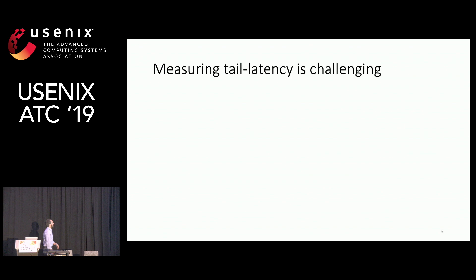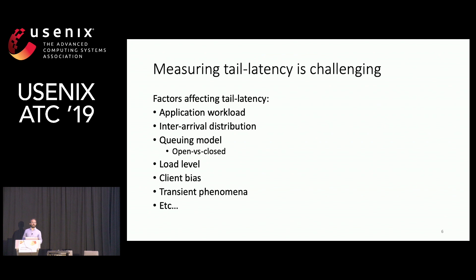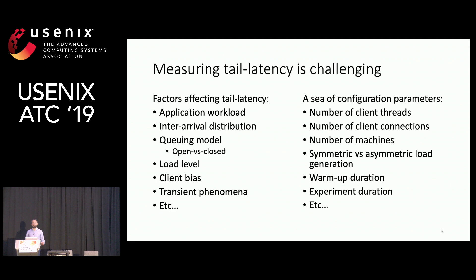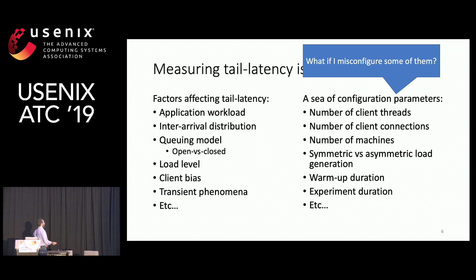Measuring tail latency can be very hard and challenging because, unlike throughput, tail latency is affected by a series of factors such as the application workload, the inter-arrival distribution, queuing model, et cetera. At the same time, the tools we use can be configured in many different ways through a wide range of parameters, such as the number of client threads, the number of client machines, the number of connections, the experiment duration, et cetera. What happens if we misconfigure some of them? Things can go very wrong — just by misconfiguring some parameters, we can get completely different results. To quantify this effect, we focus on the inter-arrival distribution and the queuing model.